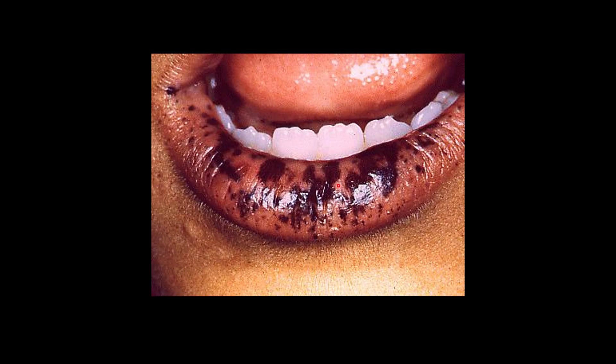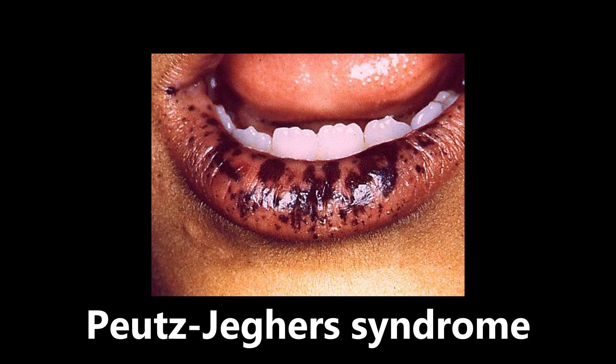This next image shows an obvious discoloration on the lower lip of a patient — this is Peutz-Jeghers syndrome. It is characterized by the development of non-cancerous hamartomas that can be seen throughout the entire GI tract. One classic presentation is this hyperpigmented lip, but hyperpigmentation of the hands and genitalia can also occur. If you see something like this, make the association with Peutz-Jeghers syndrome.